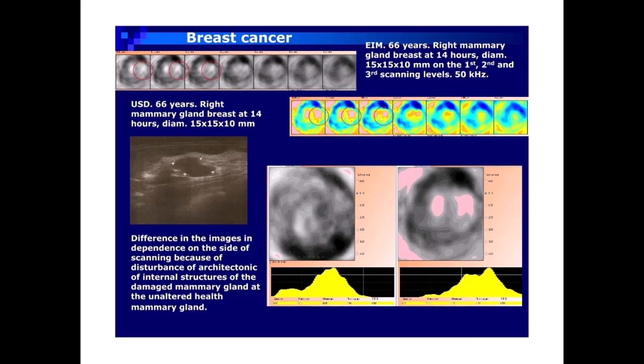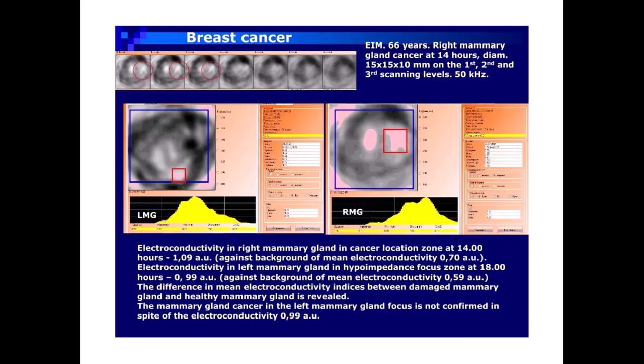EIM: 66-year-old patient, right mammary gland cancer at 14 hours, diameter 15×15×10 millimeters, on the first, second, and third scanning levels, 50 kHz. Ultrasound: 66-year-old patient, right mammary gland cancer at 14 hours, diameter 15×15×10 millimeters. Difference in image independence on the side of scanning due to disturbance of architectonics of internal structures of the damaged mammary gland compared to the unaltered healthy mammary gland.